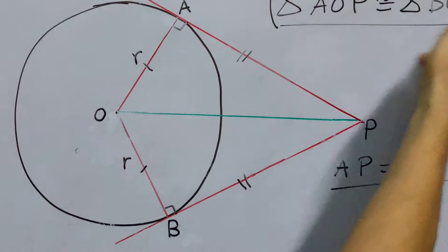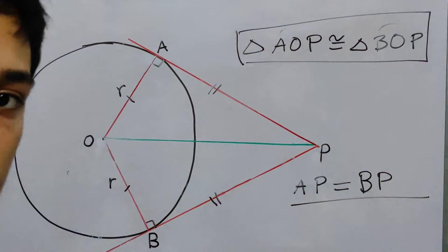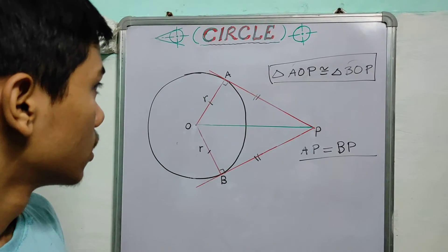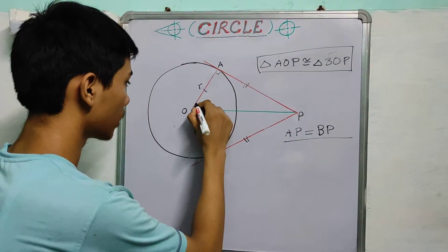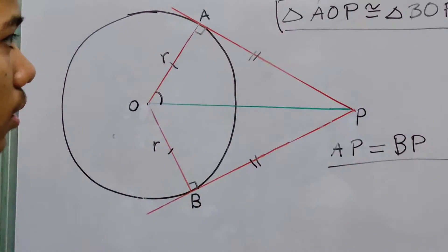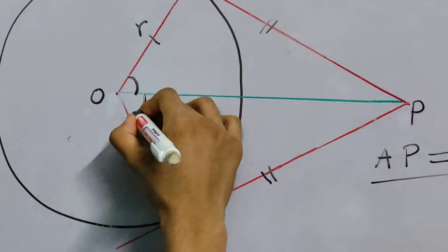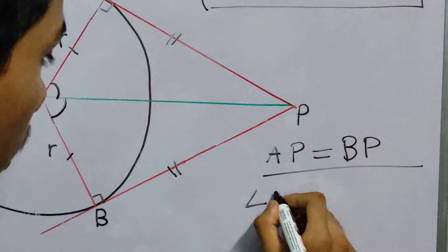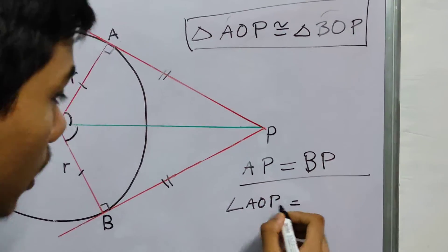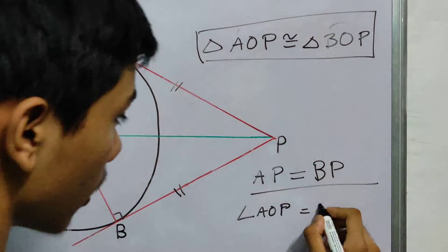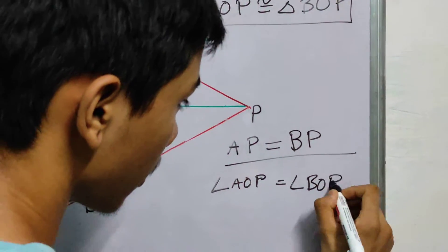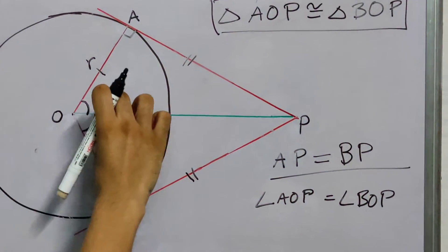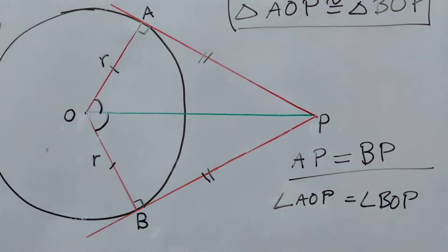See, if the triangles are congruent, the corresponding angles will also be the same. They will have the same measure. So this angle will be equal to this one. You can clearly see angle AOP. AOP will be equal to angle BOP. The condition holds, and these two triangles are equal. These two angles are equal.